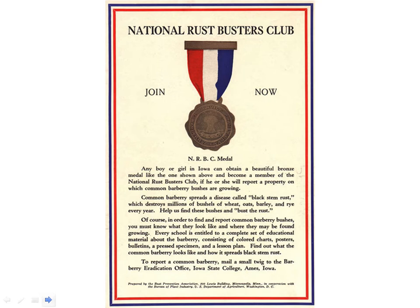In 4-H programs and similar activities, kids would go out and find barberries that could be pulled up and eradicated. You could get a little Rust Buster medal for doing these activities. The programs were so successful that barberry was pretty much eradicated from most farm areas and the program was eventually discontinued. It was never completely successful — eradication efforts never are. Some barberries survived in creek bottoms and thickets, and Puccinia graminis has started to come back, though it's not a huge pest now. There is an active monitoring program by the U.S. government — if you search for Puccinia graminis, you'll find their website with current incidence data.